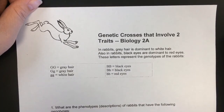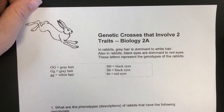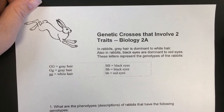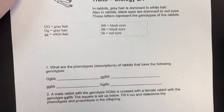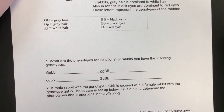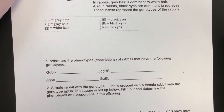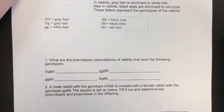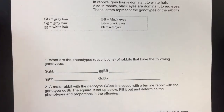In rabbits, gray hair is dominant to white hair, and black eyes are dominant to red eyes. These letters represent the genotypes of the rabbit and they give us a nice little key there. So if we go down to question one — what are the phenotypes, descriptions of rabbits that have the following genotypes?